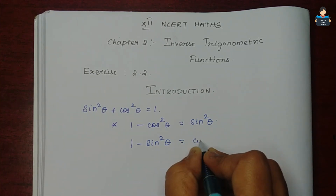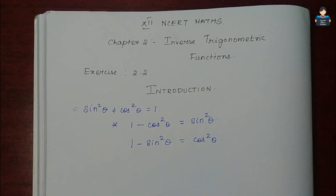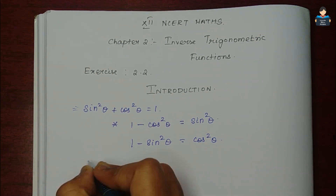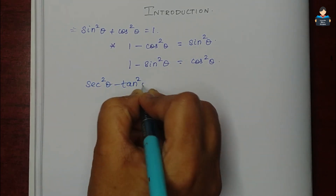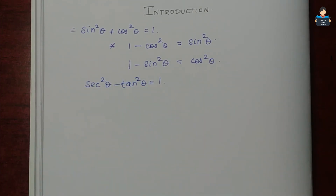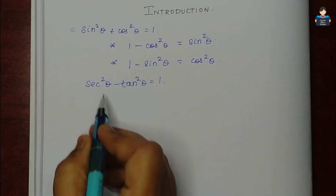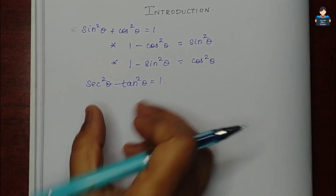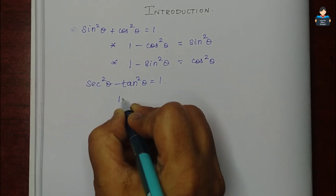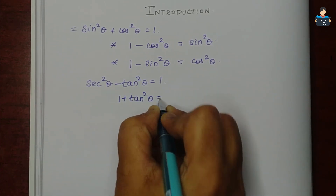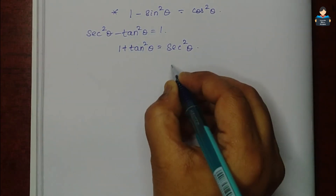The second formula is: sec²θ - tan²θ = 1. From this we can derive: 1 + tan²θ = sec²θ.